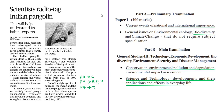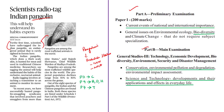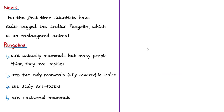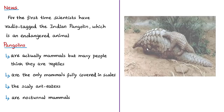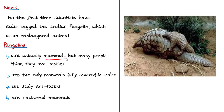The next news article is about the Indian pangolin. For the first time, scientists have radio tagged the Indian pangolin. Pangolins are mammals — not reptiles — and are the only mammals fully covered in scales, which they use to protect themselves from predators by curling into a tight ball and using their sharp-scaled tails. They eat ants, termites, and larvae, earning the name 'scaly anteaters.' They have no teeth and pick up food with their sticky tongue, which can exceed the animal's body length.